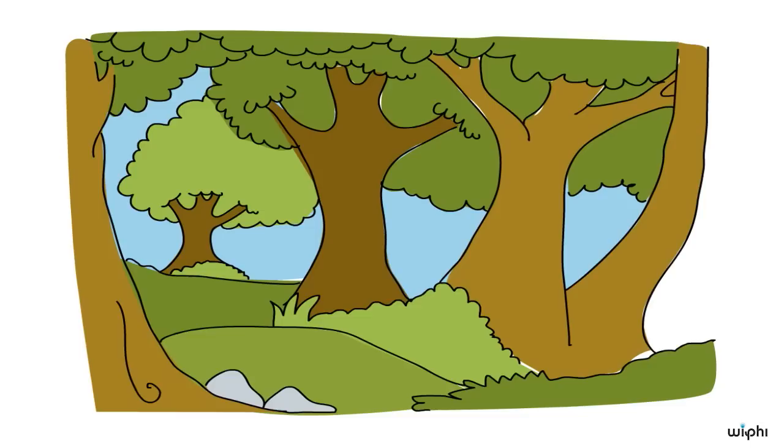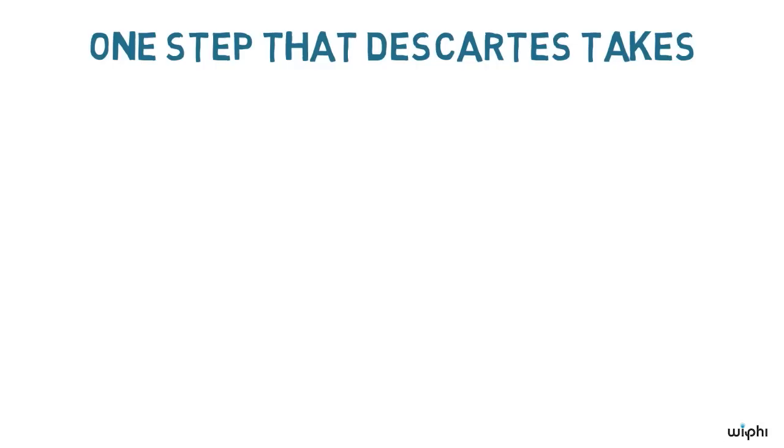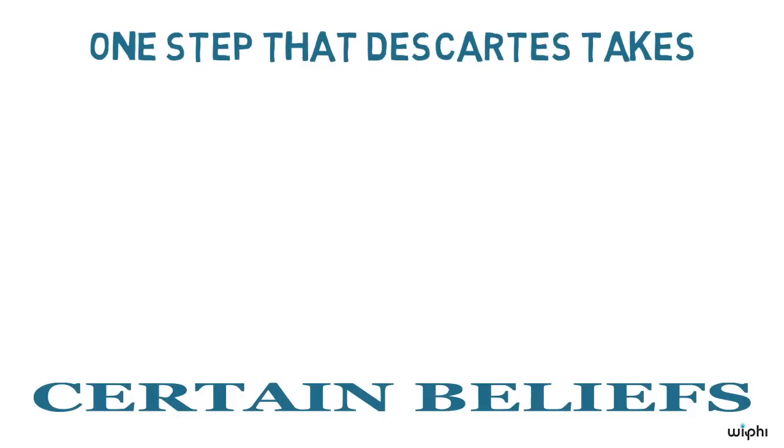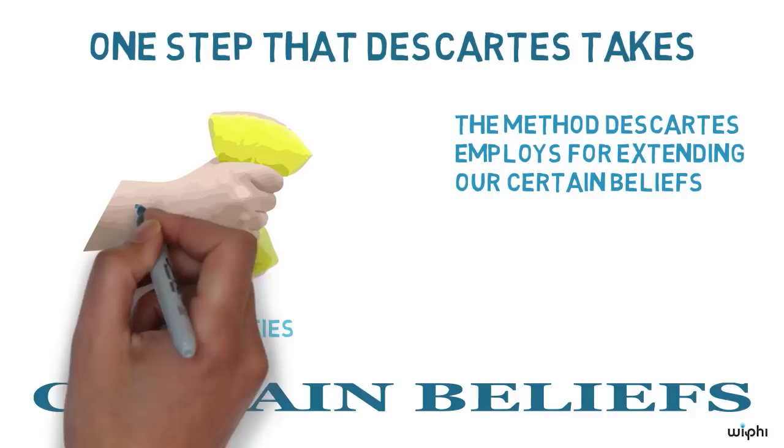It would take us hours to carefully reenact all these steps. However, in order to get a rough grasp of Descartes' procedure, it will be worthwhile to reconstruct just one step that Descartes takes in order to extend the stock of beliefs that we can justifiably be certain about.